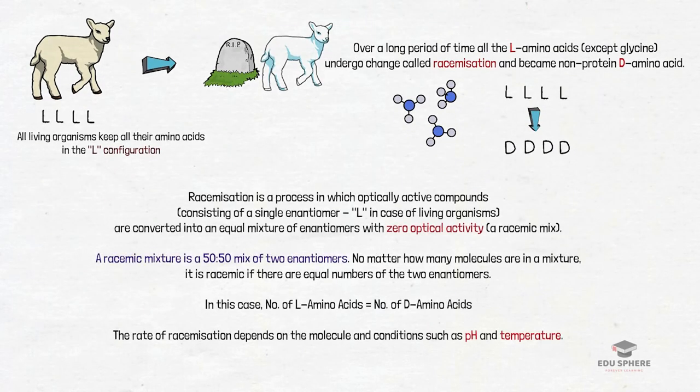So here you can find this textbook definition of racemization. It is a process in which optically active compounds are converted into an equal mixture of enantiomers with zero optical activity. The rate of racemization depends on the molecule and conditions such as pH and temperature.